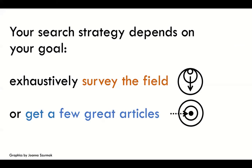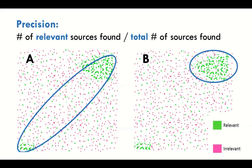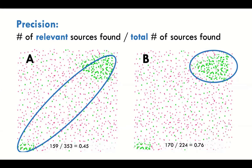In some cases we might want just a few great articles, but in knowledge synthesis we're trying to survey the field — we're looking for strategies that allow us to do that. In terms of precision, looking at two options, B appears more precise: per number of total articles found, the relevant ones are a greater percentage. B is definitely almost twice as precise as A in terms of coverage.